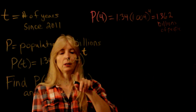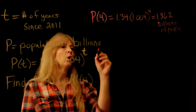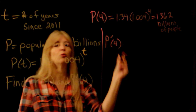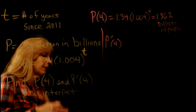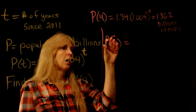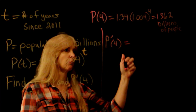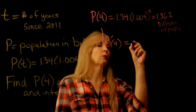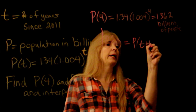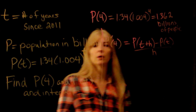Now what about that prime symbol? If you remember, that means the derivative. The derivative means we're using this formula — typically f of x plus h minus f of x over h. Let's use the variables we have: p of t plus h minus p of t, all over h.